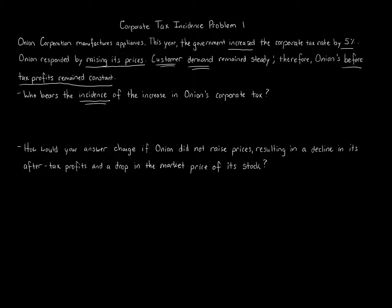Another example of incidence is sales tax — when you go to a store and buy something, the company collects the tax and sends it to the state or local authority. Incidence means ultimately who bears the responsibility. Reading the facts here: Onion raised its prices to adjust for the five percent tax, and demand stays the same.